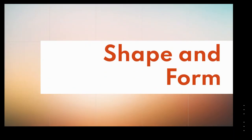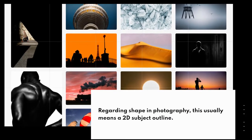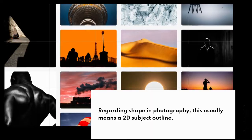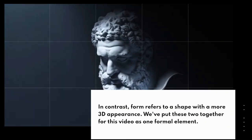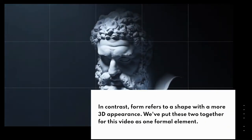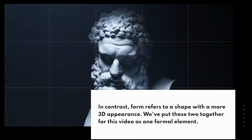Shape and Form. Regarding shape in photography, this usually means a 2D subject outline. In contrast, form refers to a shape with a more 3D appearance. We've put these two together for this video as one formal element.